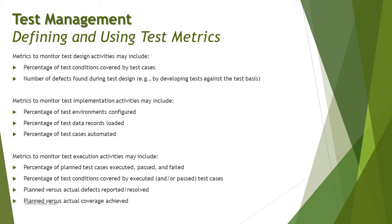Metrics to monitor test implementation activities include: percentage of test environment configured, percentage of test data records loaded, and percentage of test cases automated. These are the major aspects from a test implementation perspective. Remember, a metric is available for anything you do as part of the testing life cycle — there are many more, but from the syllabus point of view they are limited to these.